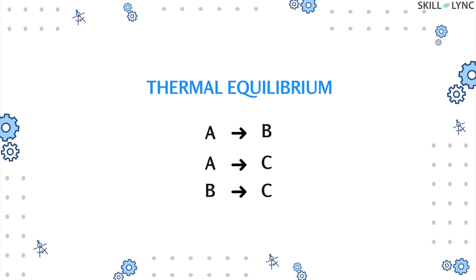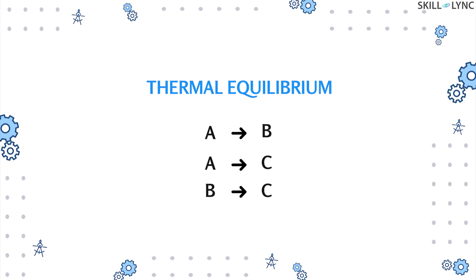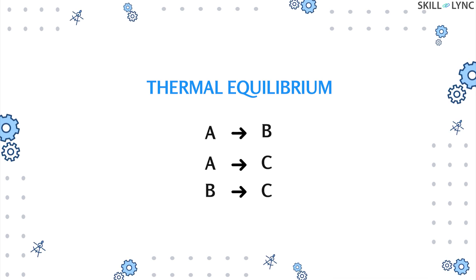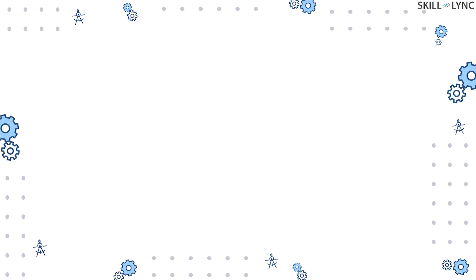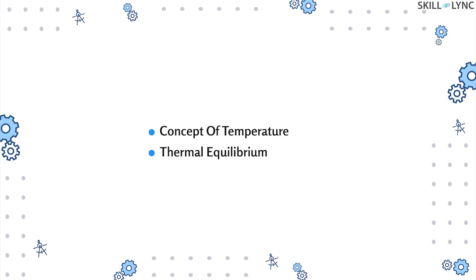This law can also be stated in terms of thermal equilibrium: when a system A is in thermal equilibrium with system B and a system C, then systems B and C are in thermal equilibrium with each other.